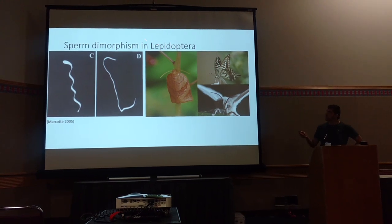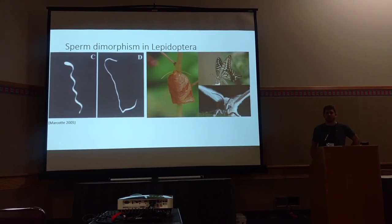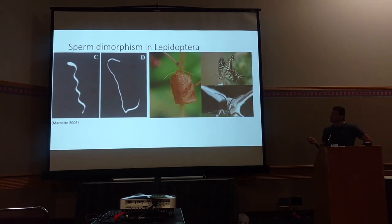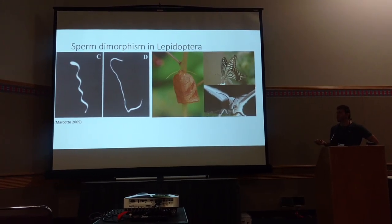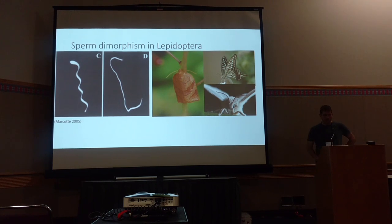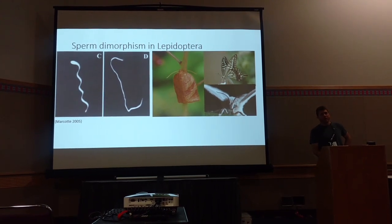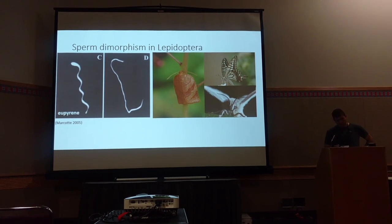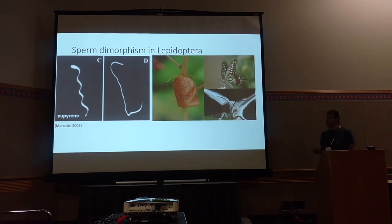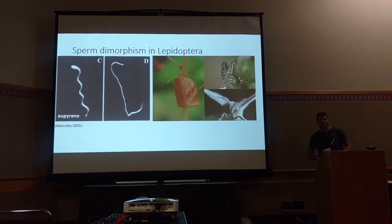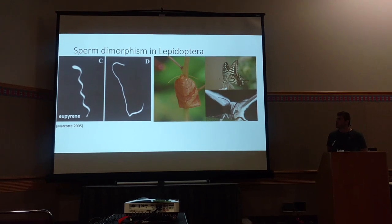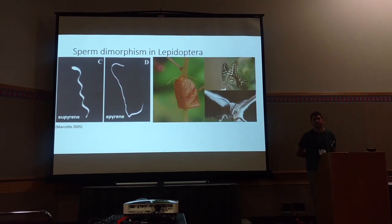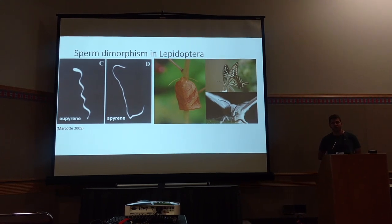Lepidoptera are the butterflies and moths, and males of almost all species in this order have some really weird reproductive biology going on. They produce two types of sperm: both what we might think of as normal fertilizing sperm, or eupyrene sperm, and the second, anucleated cell sperm, also called apyrene sperm.